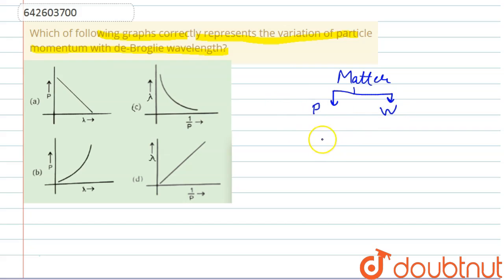According to the wave nature, he gave the value of the wavelength associated, which is equal to h by p. Here h is the Planck's constant and p is the momentum.